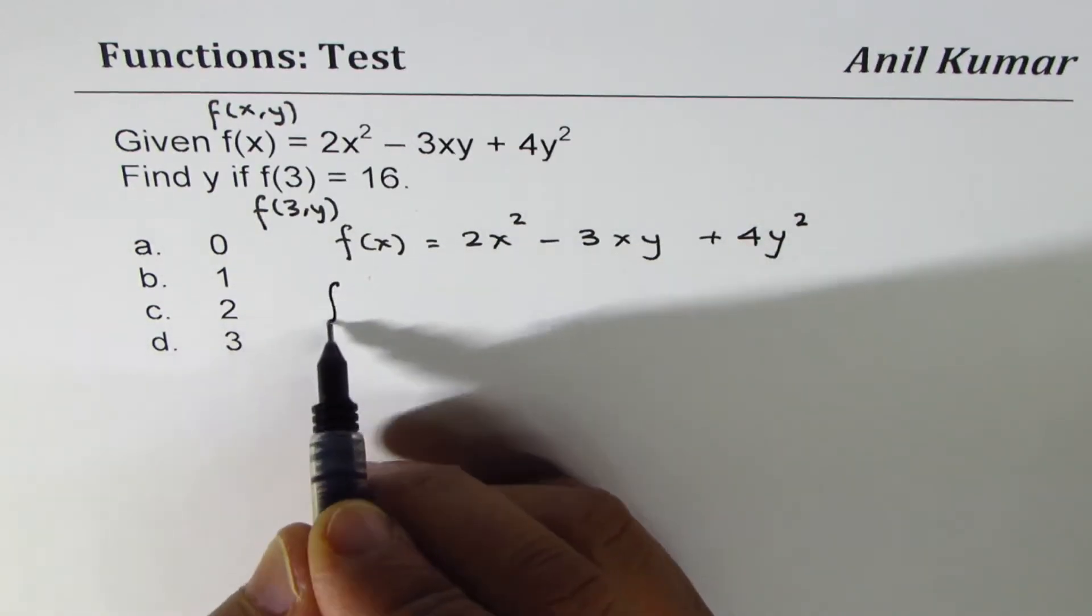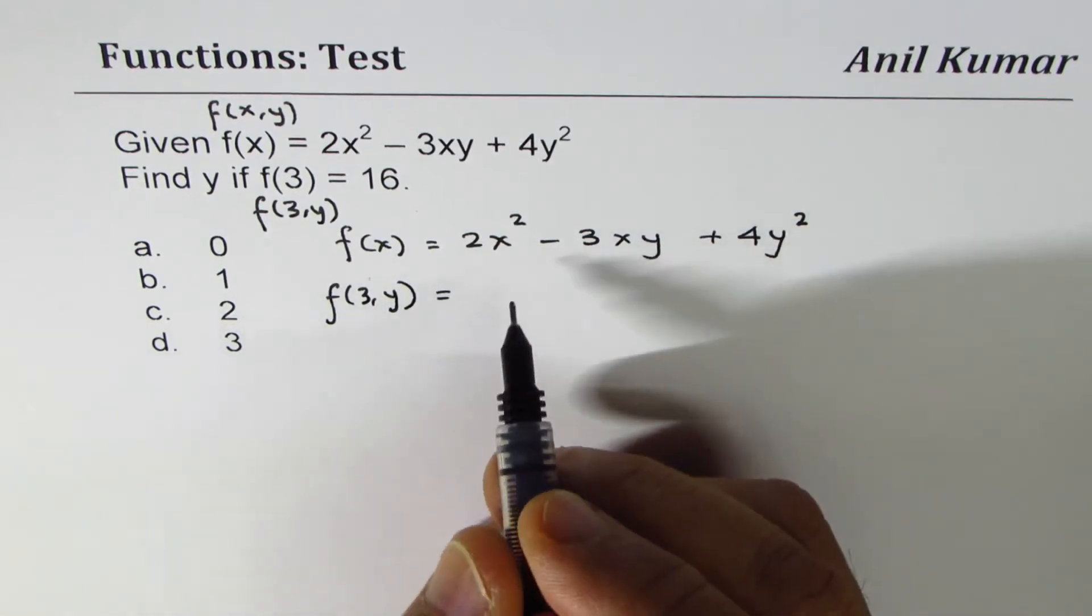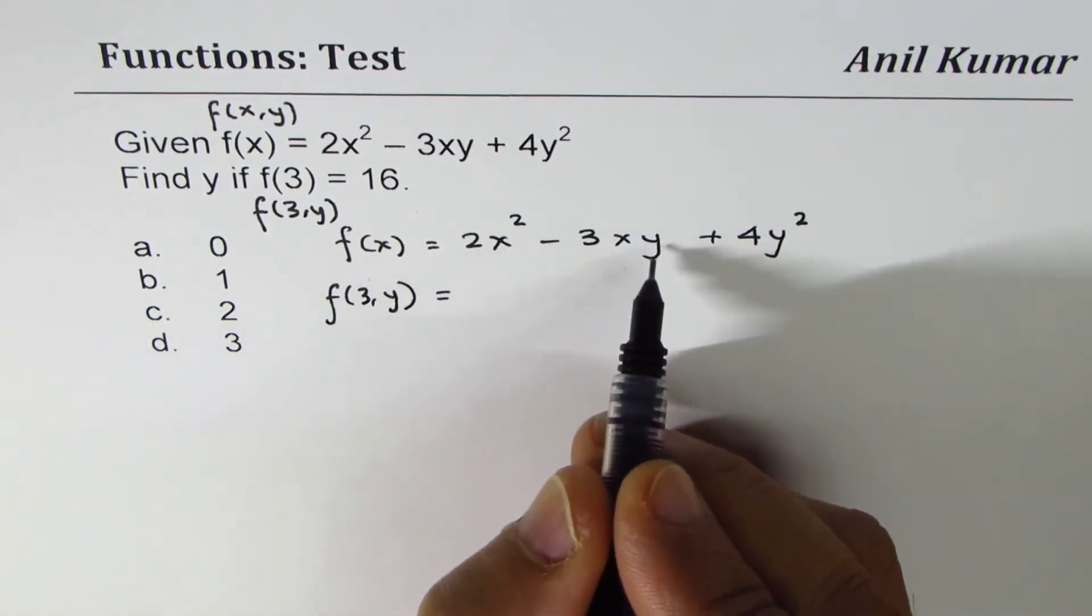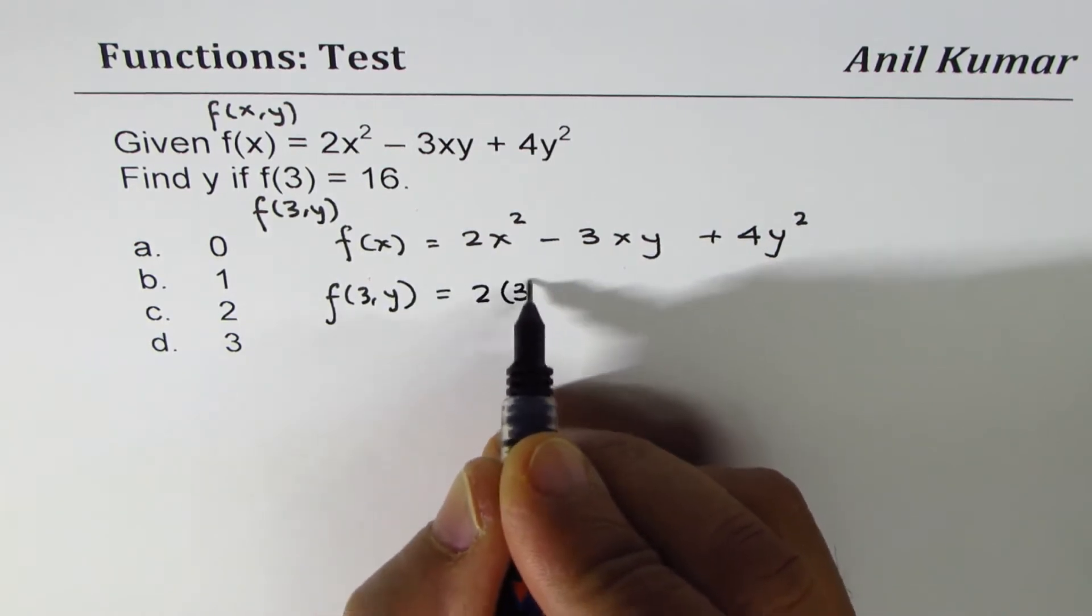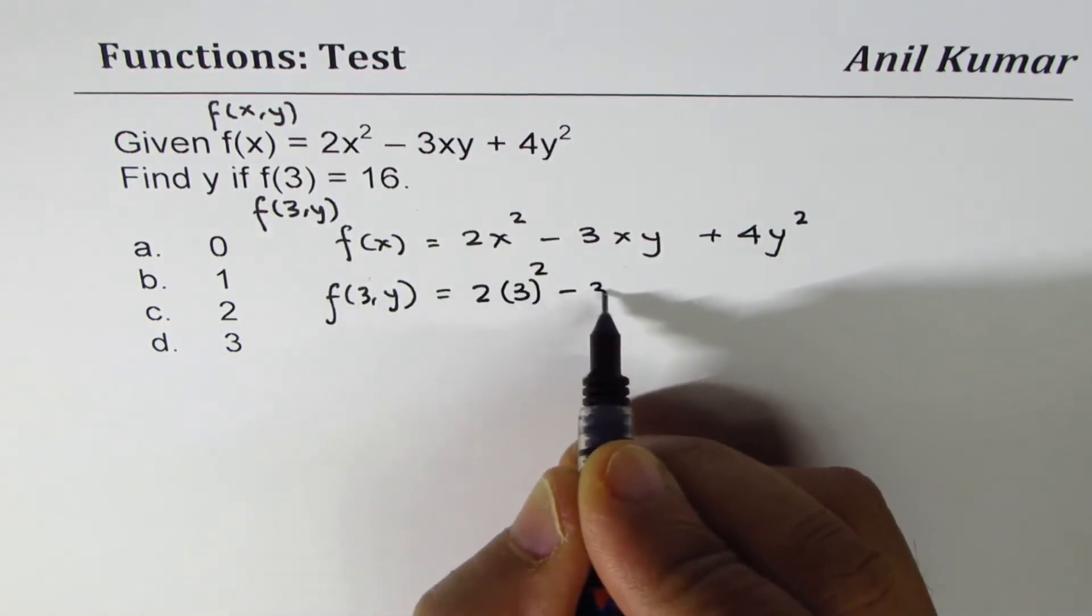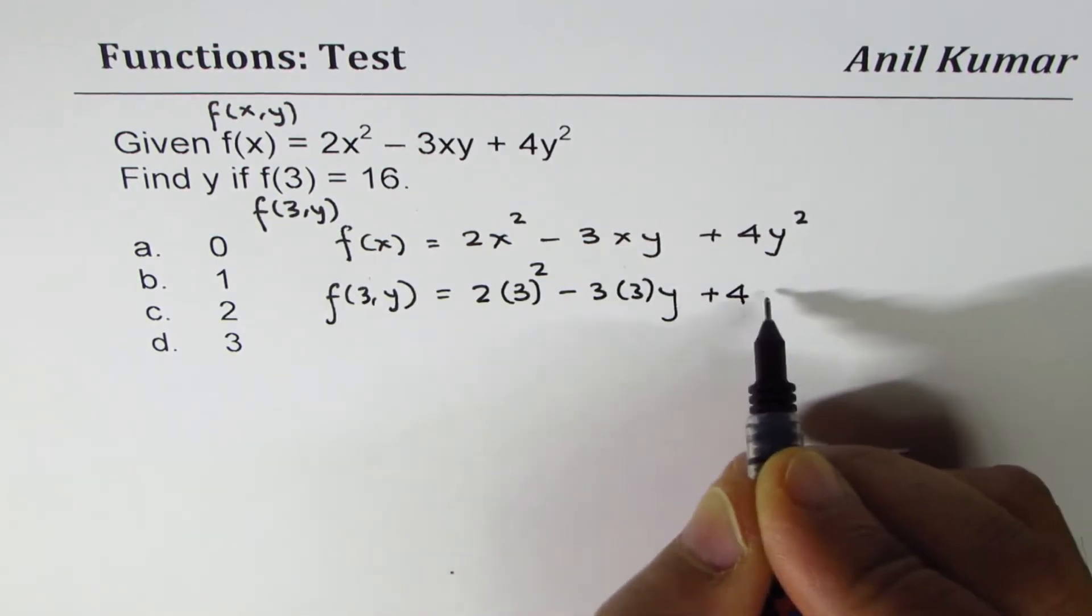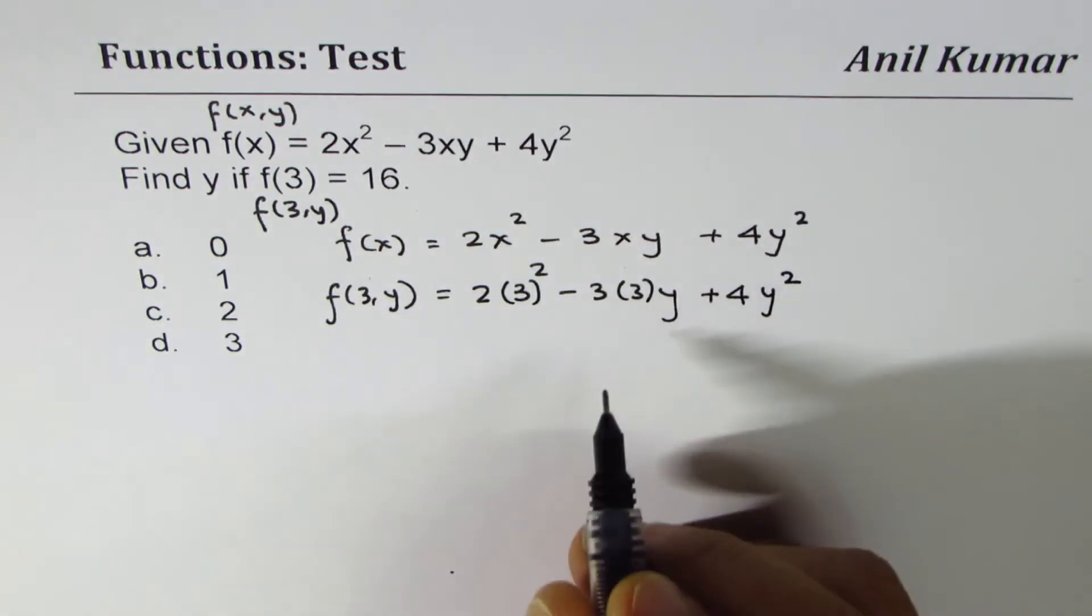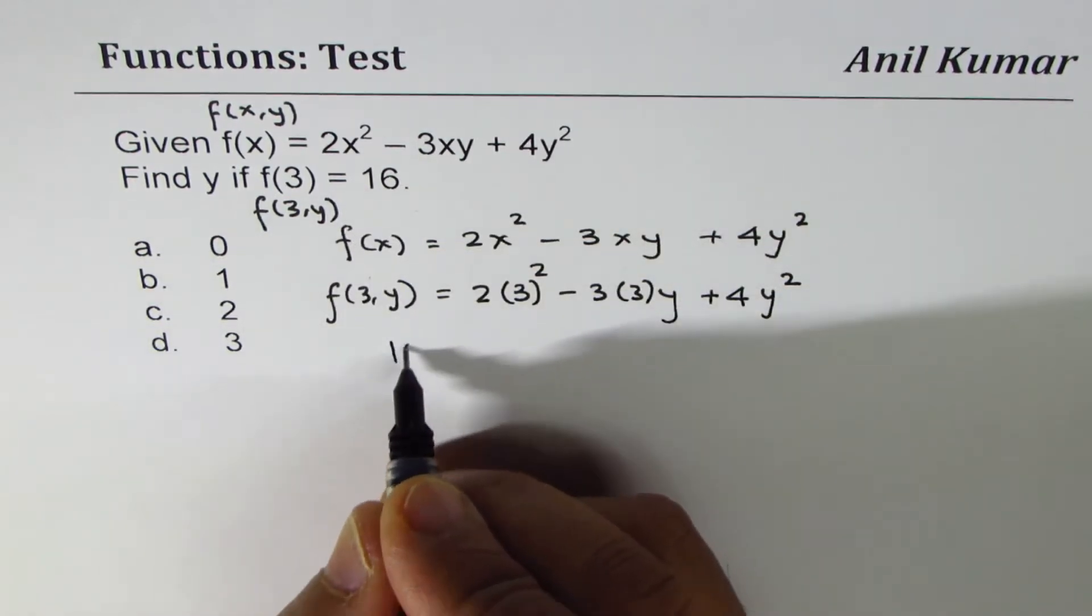So f(3,y) will be - we'll replace x with 3 and leave y as is. We have 2 times 3² minus 3 times 3y plus 4 times y². Now, f(3,y) is given to us as 16, so I'm going to write 16 here.